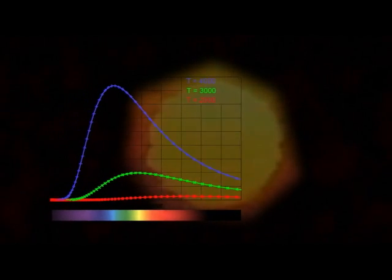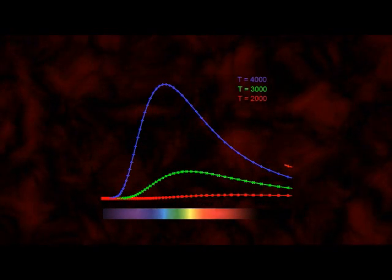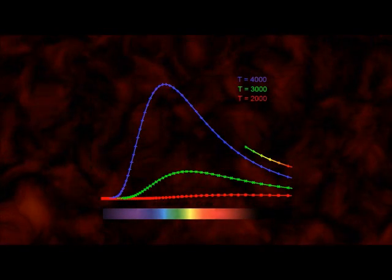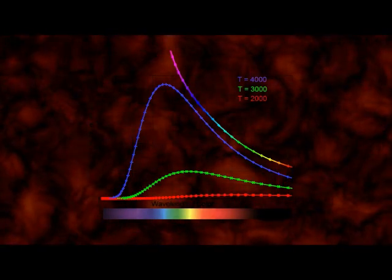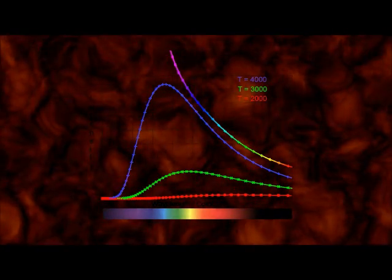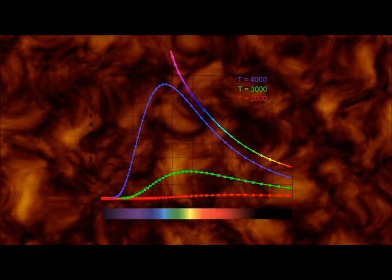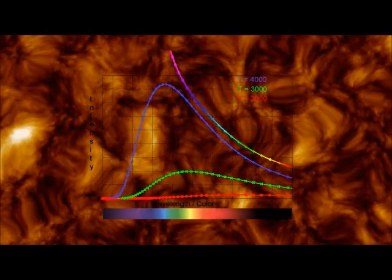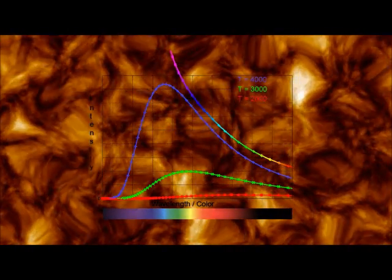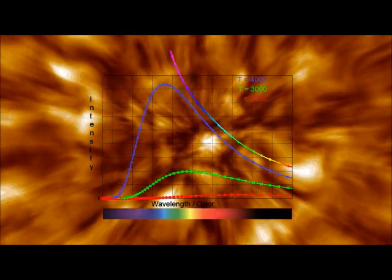But there was a problem. The scientists expected the distribution of emitted light to continue to increase at wavelengths toward the ultraviolet end of the distribution. It didn't. Instead, there was less and less light given off as they went further and further into the ultraviolet. This was called the ultraviolet catastrophe. But it wasn't a catastrophe at all. It was the beginning of something remarkable.